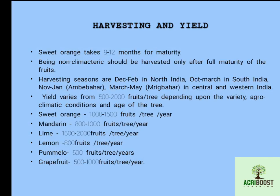Sweet orange takes 9 to 12 months for maturity. Being a non-climacteric fruit, it should be harvested only after full maturity. Harvesting seasons are December to February in north India and October to March in south India. November to January is the Ambe bahar season, and March to May is the Mrig bahar season, followed in central and western India. Yield varies from 500 to 2000 fruits per tree per year depending on variety, agro-climatic condition, and age of the tree.